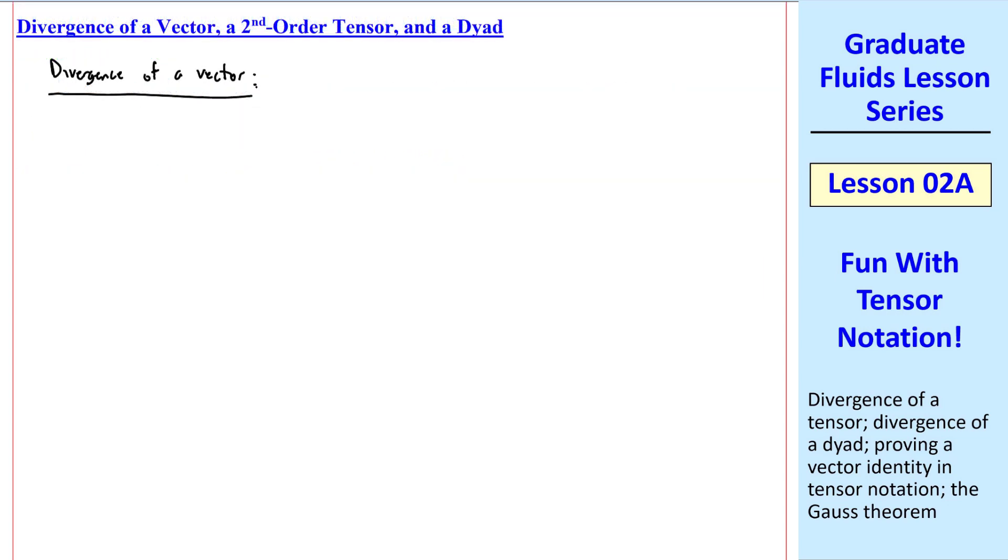First, let's consider divergence of a vector. Recall from a previous lesson, the divergence of a vector is the dot product of del dot vector, in this case u. I showed you how to write this in tensor notation as del ui del xi.